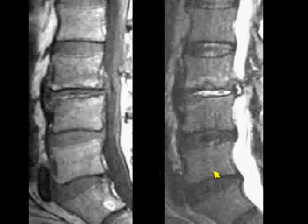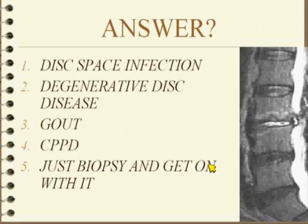We're running down the rabbit hole of infection. You're faced with this case: T1 on the left, T2 on the right. What are you going to do with this lesion? Is this a disc space infection? Is this degenerative disc disease? Is this gout? Is it CPPD, or just biopsy it?